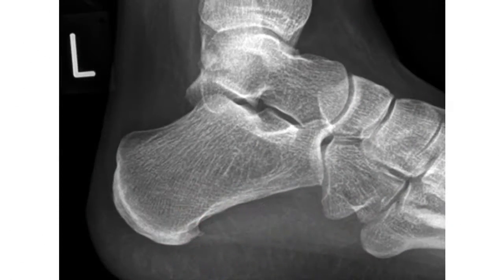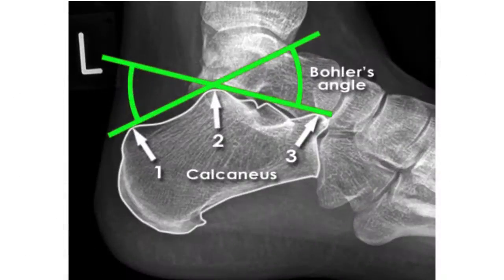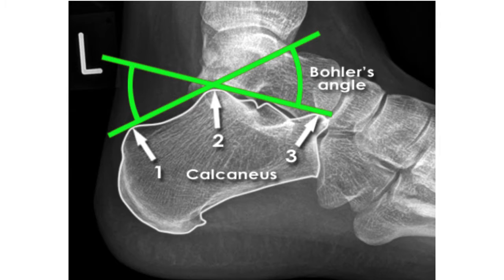Here is a normal x-ray of the foot, and you can see the calcaneus — the big bone, or the heel bone. On lateral view, this angle is formed by the intersection of two lines — Böhler's angle. The first line, line one, is drawn from the upper edge of the calcaneal body posteriorly to the upper edge of the posterior articular facet of the calcaneus at the subtalar joint.